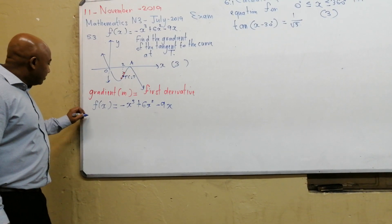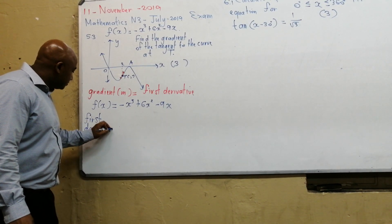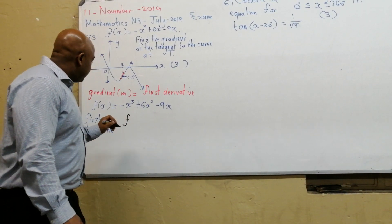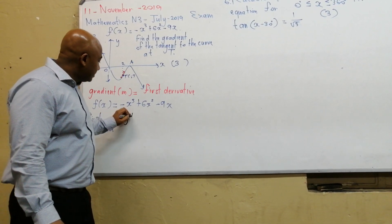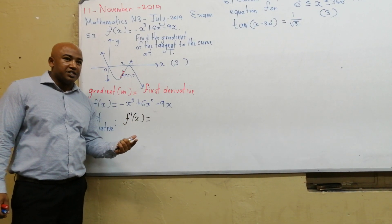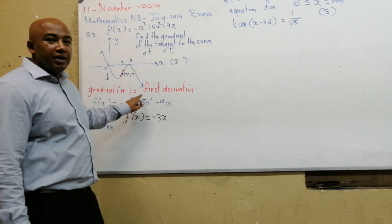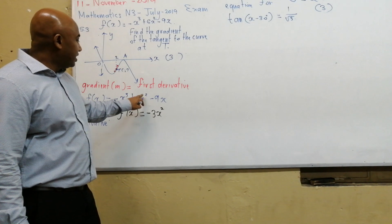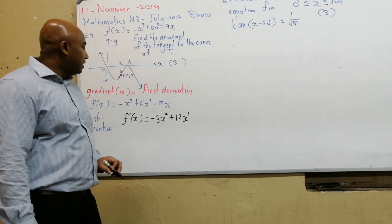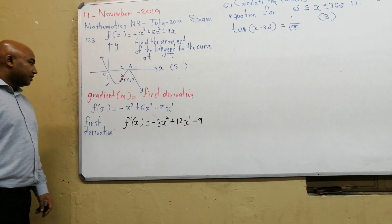Now we find the first derivative. If the function is given as f of x, you write f prime of x. Using the rules for differentiation: the derivative of minus x cubed is minus 3x squared; the derivative of 6x squared is plus 12x; and the derivative of minus 9x is just minus 9.